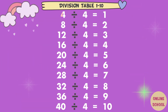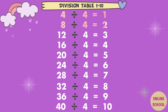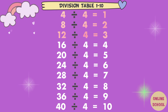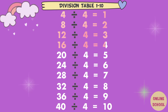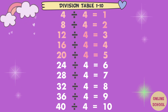4 divided by 4 equals 1. 8 divided by 4 equals 2. 12 divided by 4 equals 3. 16 divided by 4 equals 4. 20 divided by 4 equals 5.